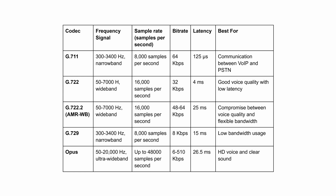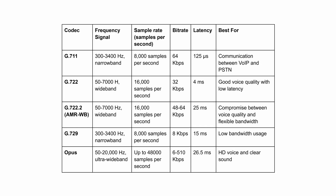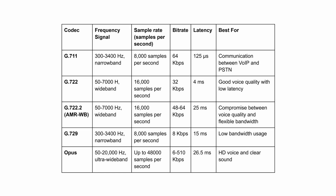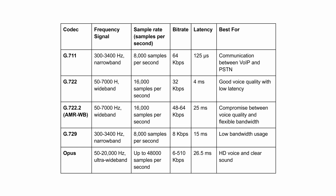G729 offers narrowband sound quality with a low bit rate of just 8 kilobits per second. This low bit rate means the codec consumes the least bandwidth of any on this list, making it a great option for teams with many users sharing the same network.